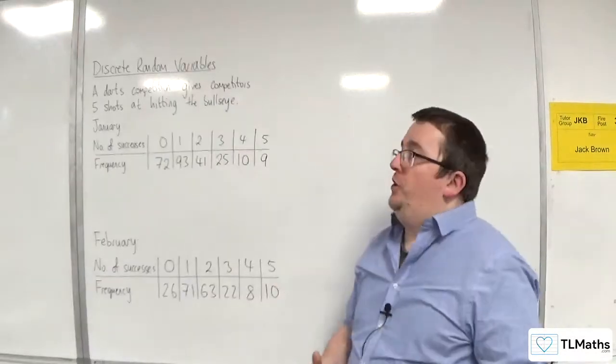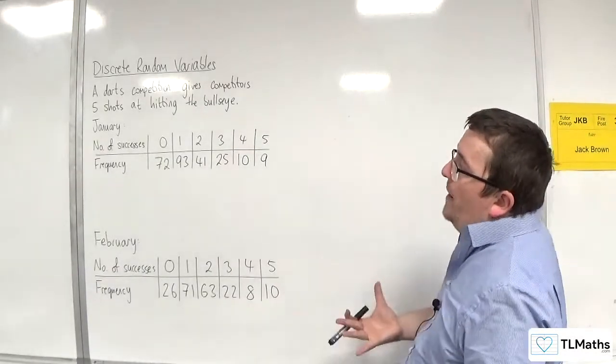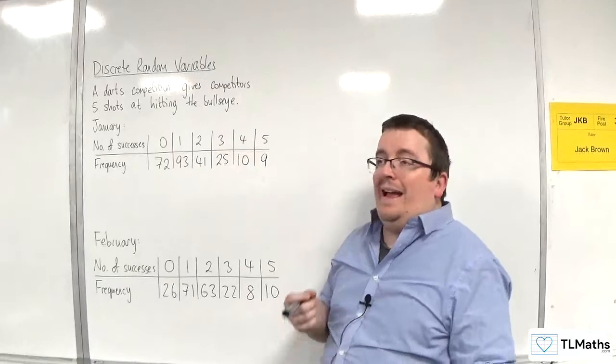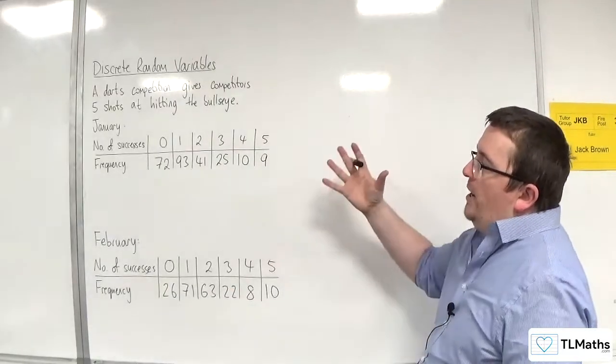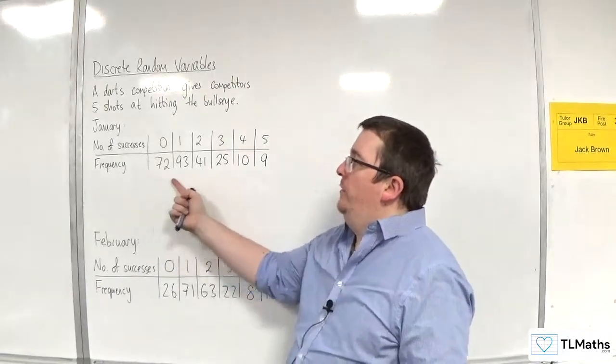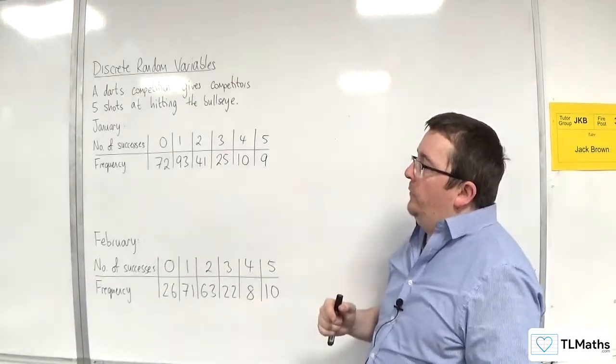In this video, we have a darts competition that gives competitors five shots at hitting the bullseye. In January, this is the first round, and these are the results.